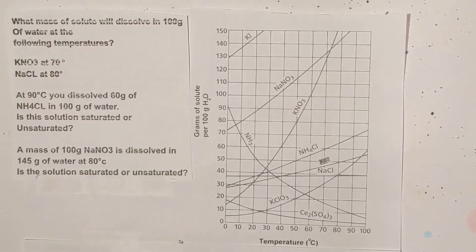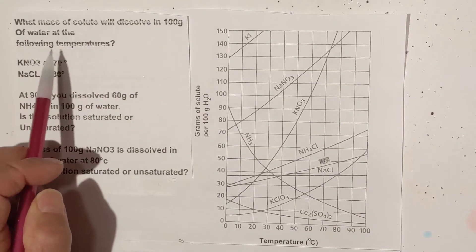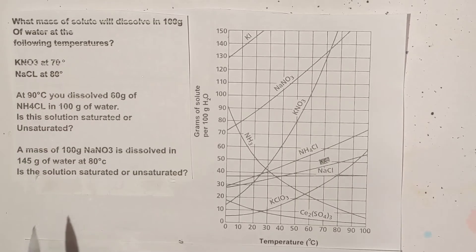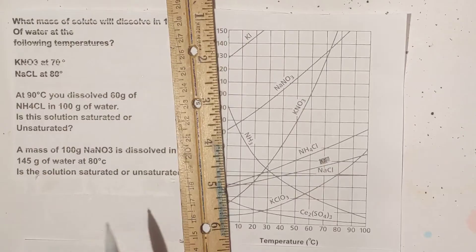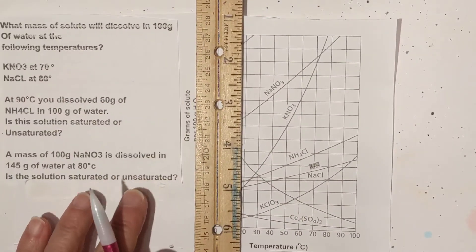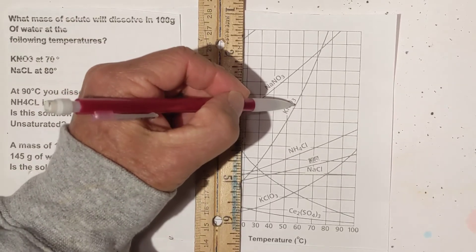So let's work a couple of common problems that you may encounter with these. What mass of solute will dissolve in 100 grams of water at the following temperatures? You have KNO3 at 70 degrees. So 70 degrees is here and I'm going to use a ruler. Let's find KNO3, which is this line right here.